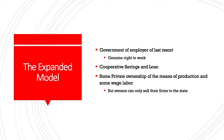The expanded model Schweikert proposes includes government as an employer of last resort, cooperative savings and loan, and some private ownership of the means of production and some wage labor. If we have a genuine right to work, then someone has a duty to provide those jobs. Within a democratically controlled government and democratically controlled worker cooperatives, the duty falls to the government and the people to provide those jobs. This addresses the common capitalist question of who is supposed to supply the jobs — it is the community, which is an ethical imperative of any society, particularly one of economic democracy.